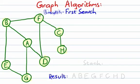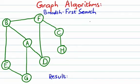Our stack is empty, which means our traversal is complete. For our next example, we're going to take a look at another graph algorithm — in this case, a breadth-first traversal. The major difference between a breadth-first traversal and a depth-first traversal is the use of a different supporting data structure: in this case, a queue.